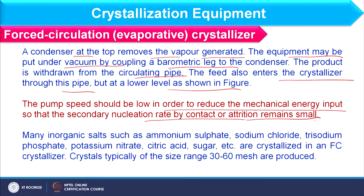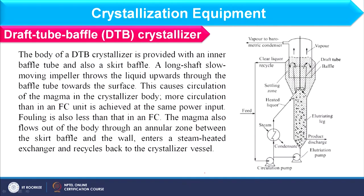The product is withdrawn from the circulating pipe, and feed also enters the crystallizer through the pipe at a lower level. Pump speed should be low in order to reduce the mechanical energy input, so the secondary nucleation rate by contact or attrition remains small. Forced circulation crystallizers are most commonly used for ammonium sulphate, sodium chloride, trisodium phosphate, potassium nitrate, citric acid, sugar, etc. In this case, crystal sizes are usually 3 to 60 mesh.